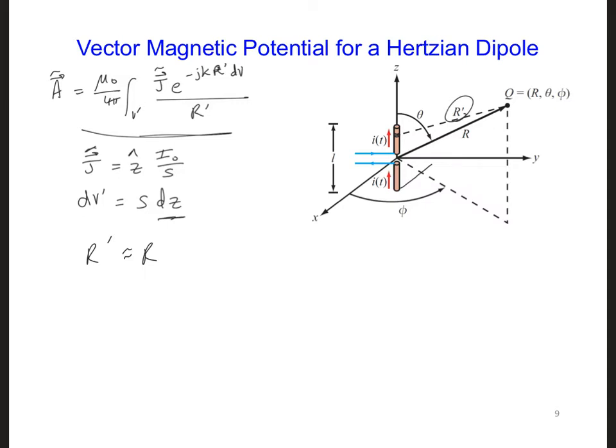Plugging all these into the expression, we're going to get mu-naught over 4 pi, our single integral from minus L over 2 to L over 2 z hat i naught e to the minus jk r over s r times s dz.